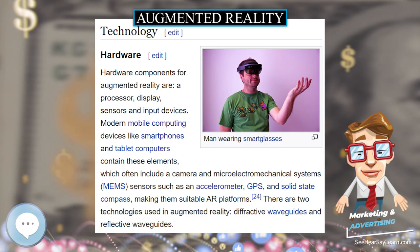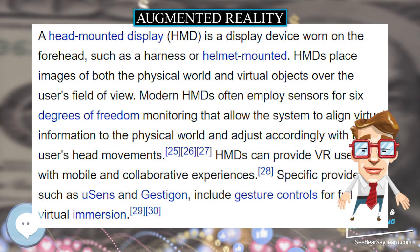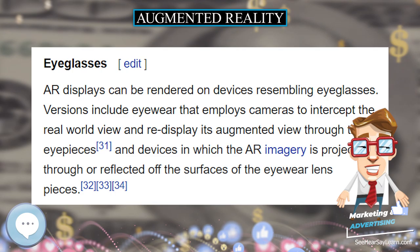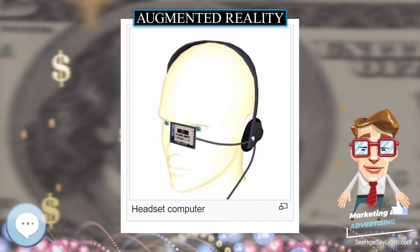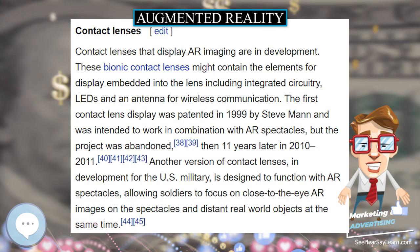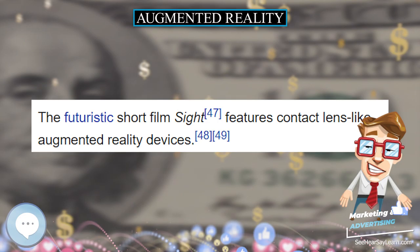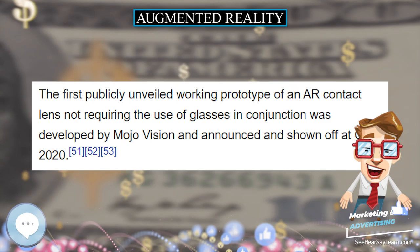In education, content may be accessed by scanning or viewing an image with a mobile device or by using markerless AR techniques. Augmented reality is used to enhance natural environments or situations and offer perceptually enriched experiences. With the help of advanced AR technologies — such as adding computer vision, incorporating AR cameras into smartphone applications, and object recognition — the information about the surrounding real world of the user becomes interactive and digitally manipulated. Information about the environment and its objects is overlaid on the real world. This information can be virtual or real, for example seeing electromagnetic radio waves overlaid in exact alignment with where they actually are in space. Augmented reality also has a lot of potential in the gathering and sharing of tacit knowledge. Augmentation techniques are typically performed in real time and in semantic contexts with environmental elements.